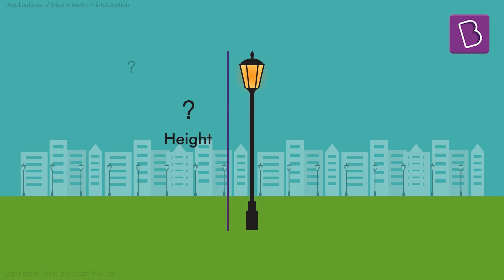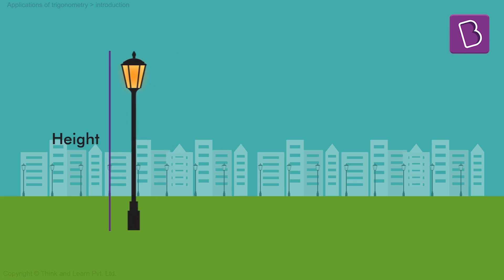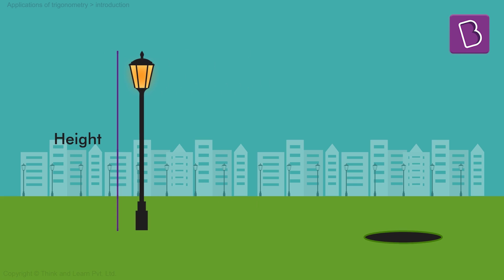Let's say I have a long pole here and I need to measure its height. For the sake of simplicity, I'm going to assume that I'm actually standing inside a hole of sorts and the ground is at my eye level. So the base of the pole starts at my eye level and the pole goes further up from there.